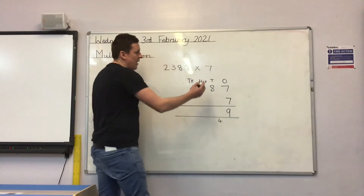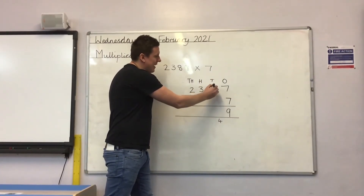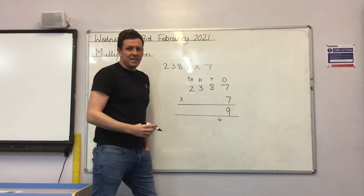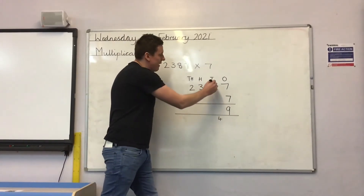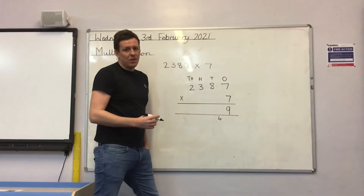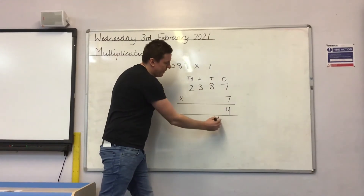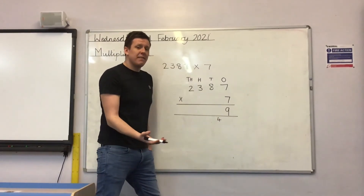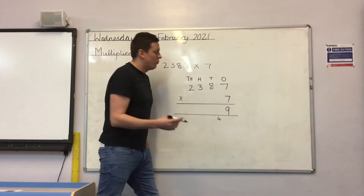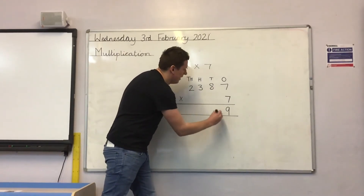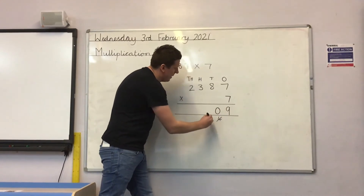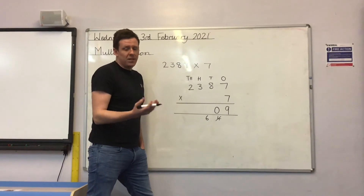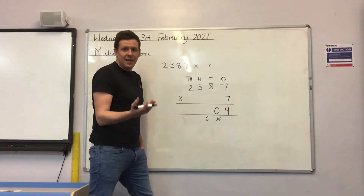Then in my tens column, I have 8 tens times 7. 8 times 7 is 56. So I have 56 tens, or 560. But I mustn't forget, I need to add on the 4 tens that I carried earlier. 56 add 4 tens? Right again, it's 60. So I'll put my 0 in my tens column and I'll carry my 6 over into my hundreds. Because 60 tens, Year 5, is 600.